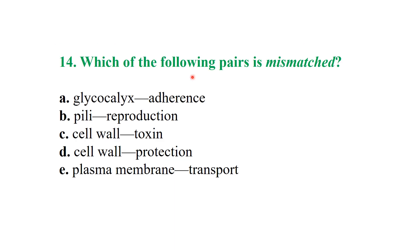Which of the following pairs is mismatched? Options: glycocalyx-adherence, pili-reproduction, cell wall-toxin, cell wall-protection, plasma membrane-transport. Pili are not responsible for reproduction; they are used for the transfer of genetic material. So pili-reproduction is the mismatched pair.